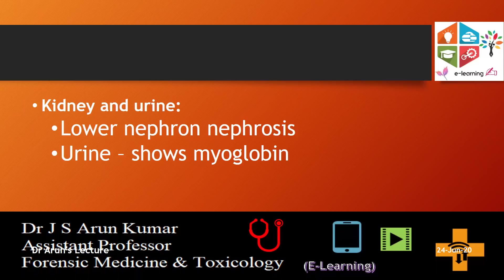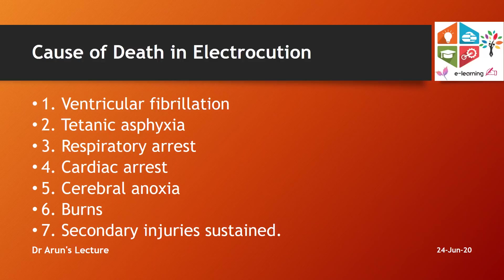Causes of death in electrocution include immediate causes — ventricular fibrillation, titanic asphyxia, respiratory arrest, cardiac arrest, and cerebral anoxia — as well as secondary burns from ignition of clothing, and secondary injuries such as multiple fractures or an individual being thrown from the site of impact by the electrical force.